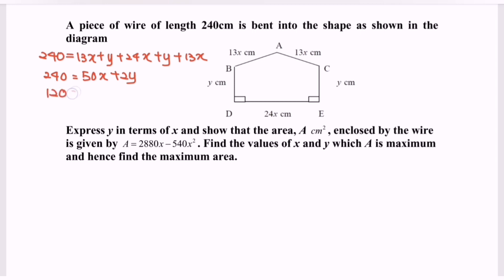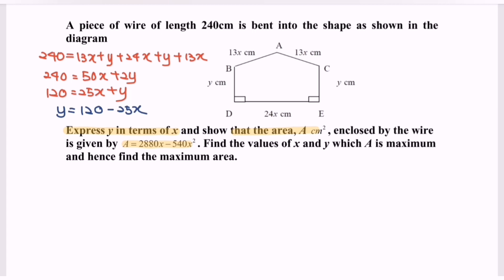Simplifying further, 120 is equal to 25x plus y. We express y in terms of x, where y is equal to 120 minus 25x. We then show that the area A enclosed by the wire is given by A is equal to 2880x minus 540x squared.